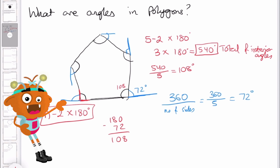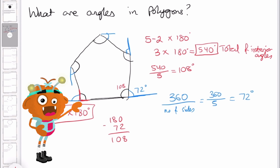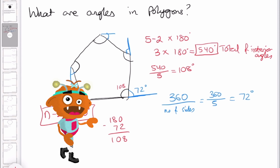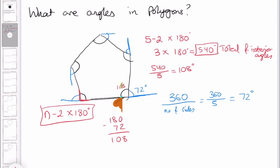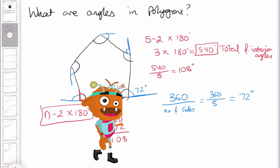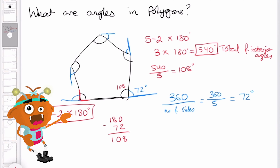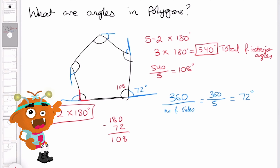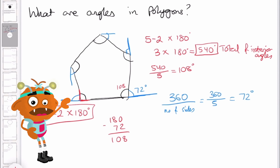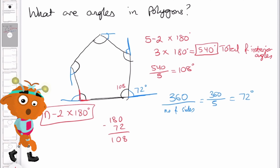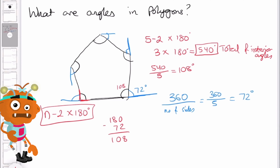That proves that one interior angle is 108 degrees. I hope that was a clear insight into what angles in polygons are and how to calculate interior and exterior angles. In this video we'll learn about angles in polygons, and the questions are based on Edexcel, AQA, and OCR exams, giving you further guidance. So without further ado, let's get started.